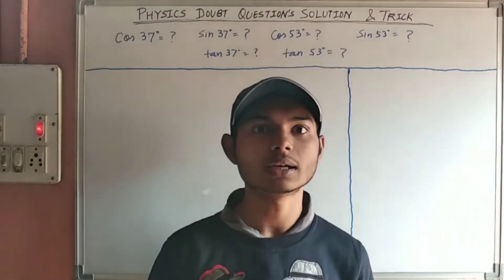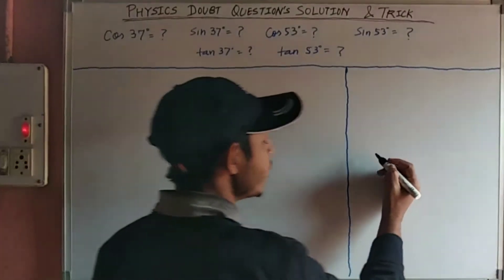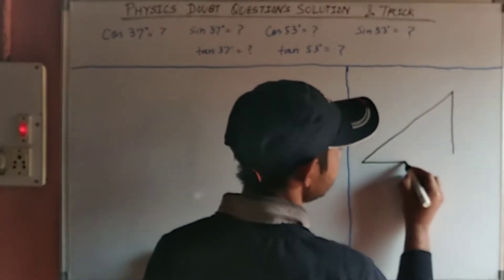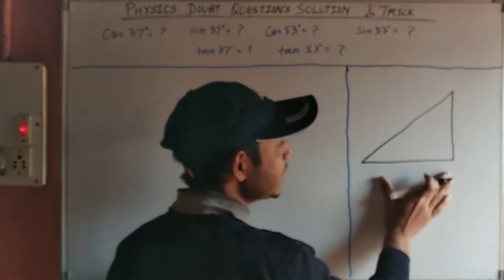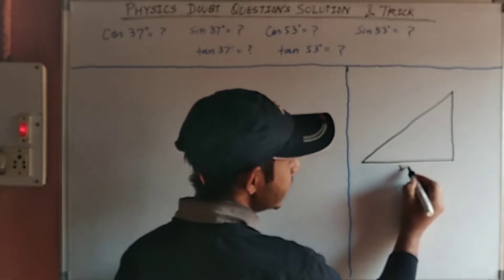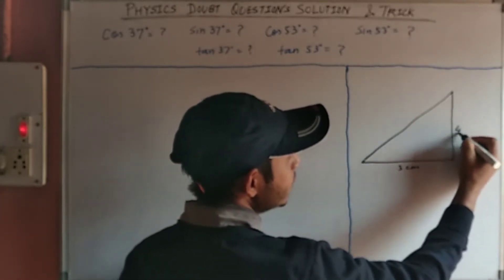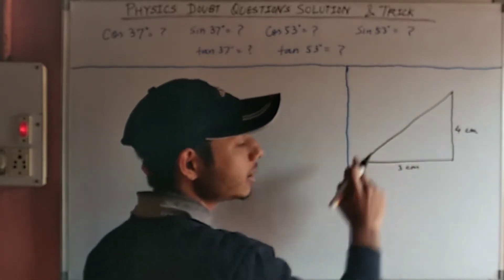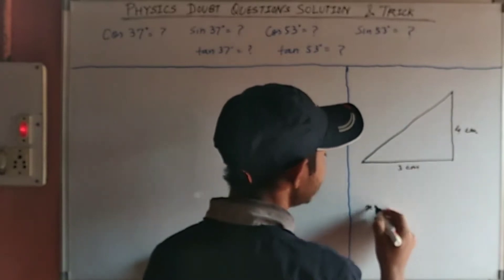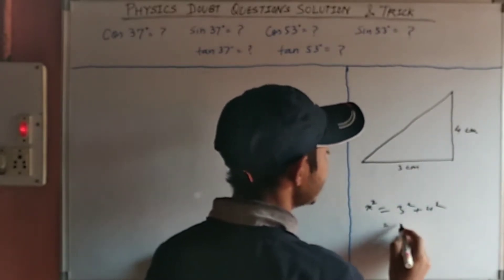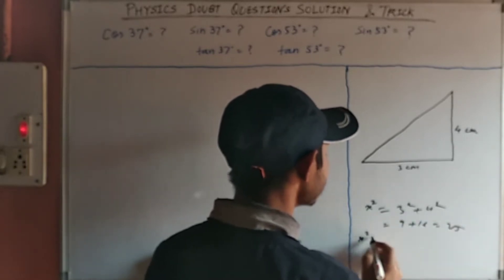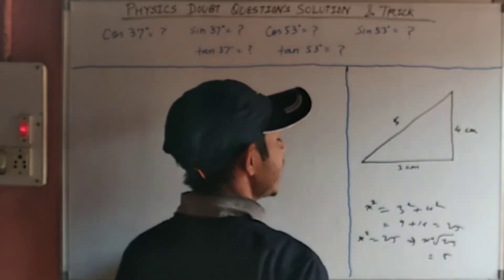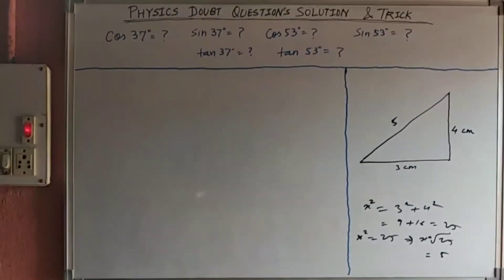We want to calculate values like sin 37°, sin 53°, cos 37°, cos 53°. You have to remember two things. First, a right-angle triangle. Remember the side lengths: this side is 3 cm, this side is 4 cm. From Pythagoras theorem, the hypotenuse x = √(3² + 4²) = √25 = 5. So the hypotenuse length is 5.